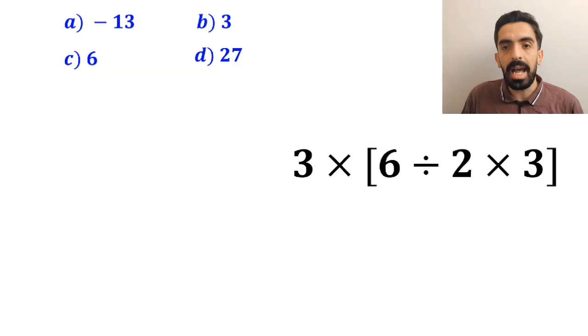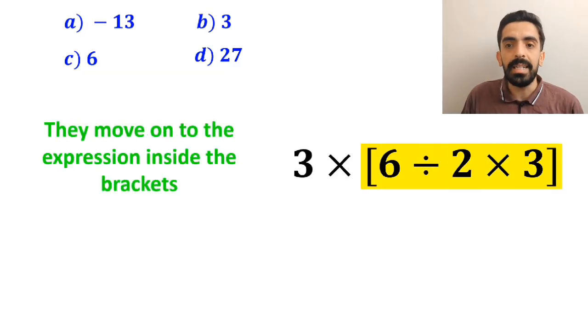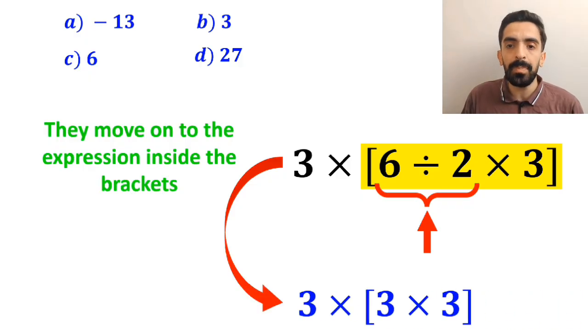In the next step, they move on to the expression inside the brackets and start with 6 divided by 2. So, this expression simplifies to 3 multiplied by 3 times 3 inside the brackets.